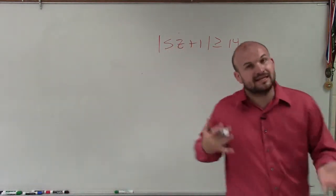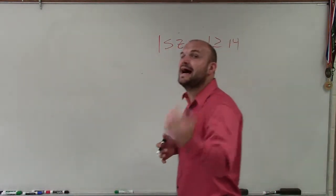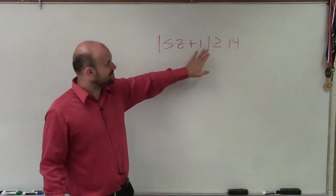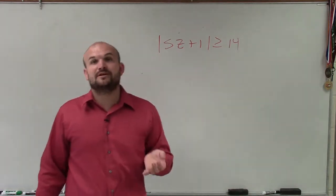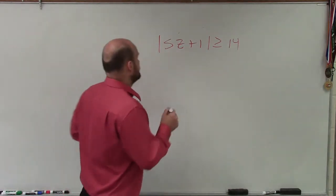When we set up our two cases with an inequality, we're going to create a compound inequality. When you have an absolute value that's greater than or equal to or just greater than, you're going to set up a compound inequality that's going to be in the form of OR.